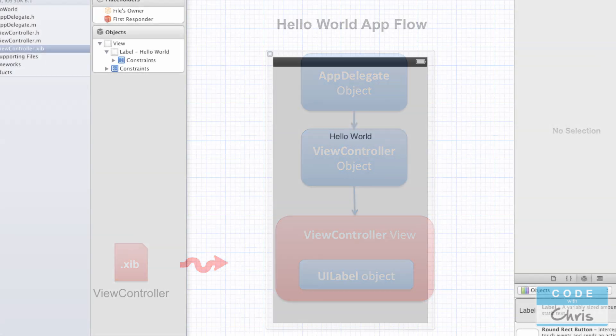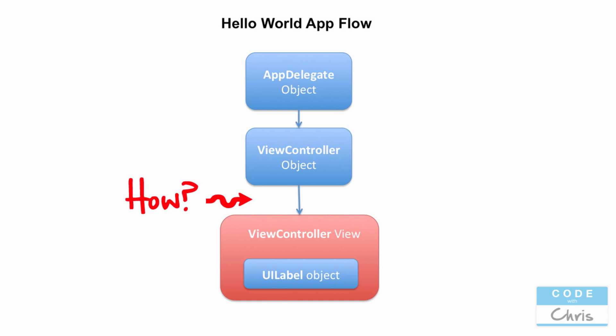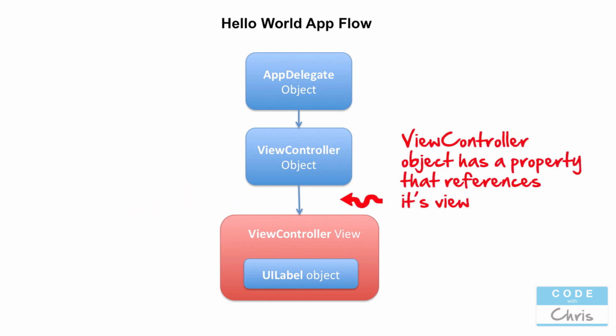Going back to the view controller class — when an instance of the view controller class gets created, the view controller is supposed to manage the view. So in order for the view controller object to manage the view, it must have some way to find it in memory. And in fact there is: the view controller object has a view property that references the view object. A property is just a way for a class to keep track of something, so the view property points to the location of the view object in memory.